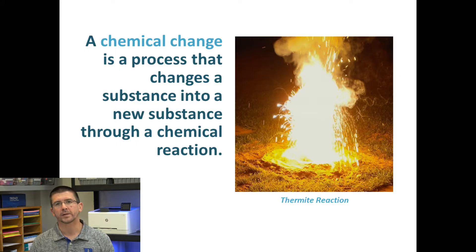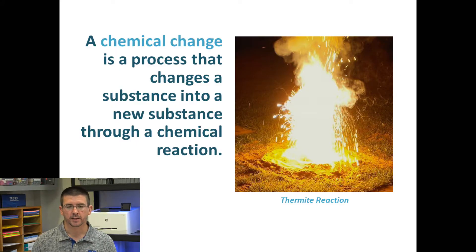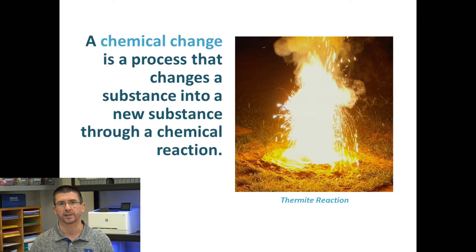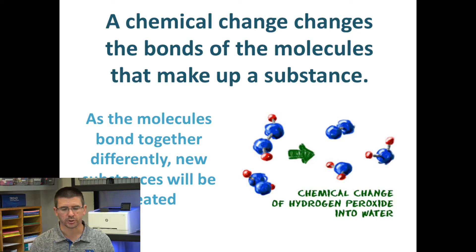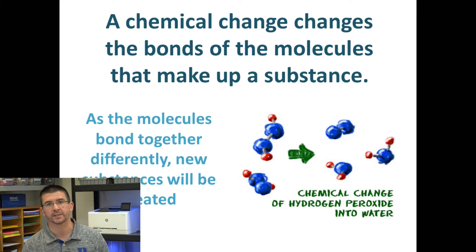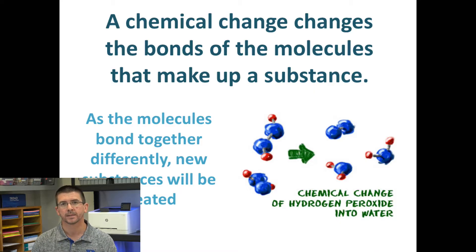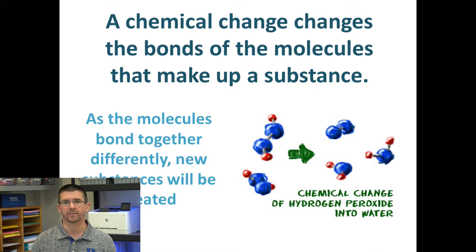On the other hand, when we talk about chemical change, we're talking about some sort of process that actually will change a substance into a new substance on the molecular level. Chemical changes take place when the bonds that hold molecules together — that actually hold the individual atoms together — are broken apart, and those atoms bond together differently to form new substances.